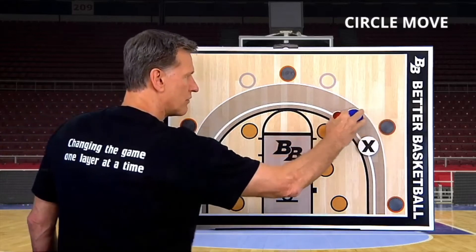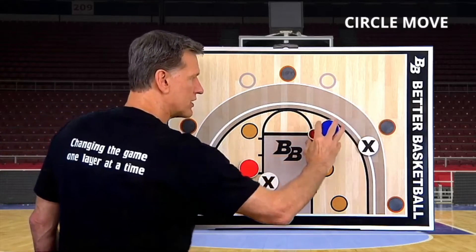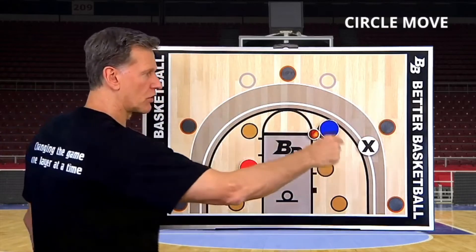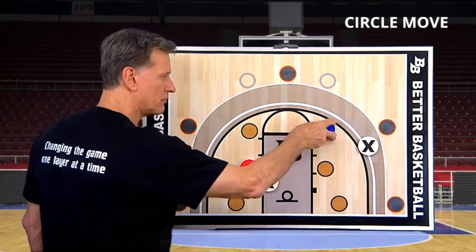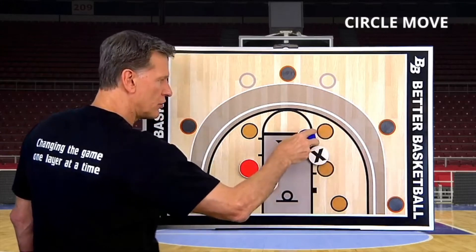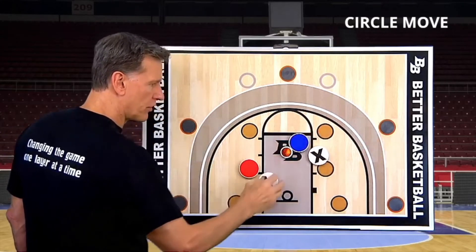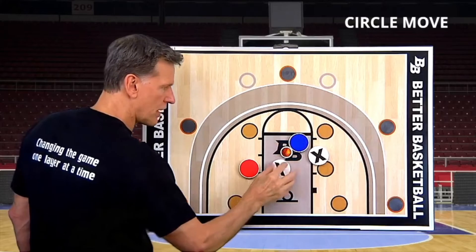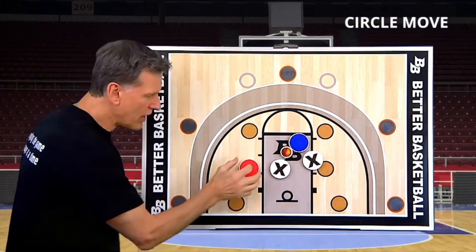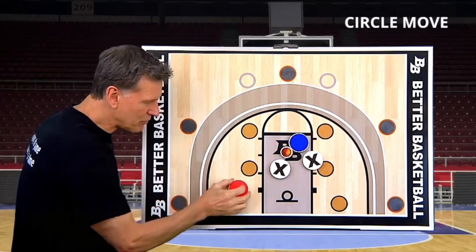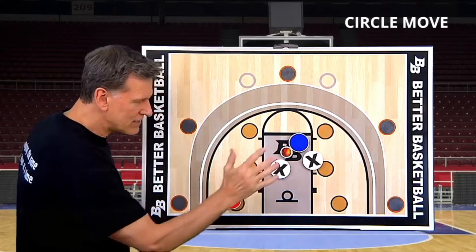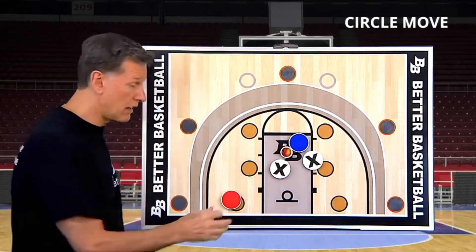So blue is driving right — just remember, he's turning the circle this way. And your defender steps up to stop this drive. A step down or slide down doesn't help much, though it can.